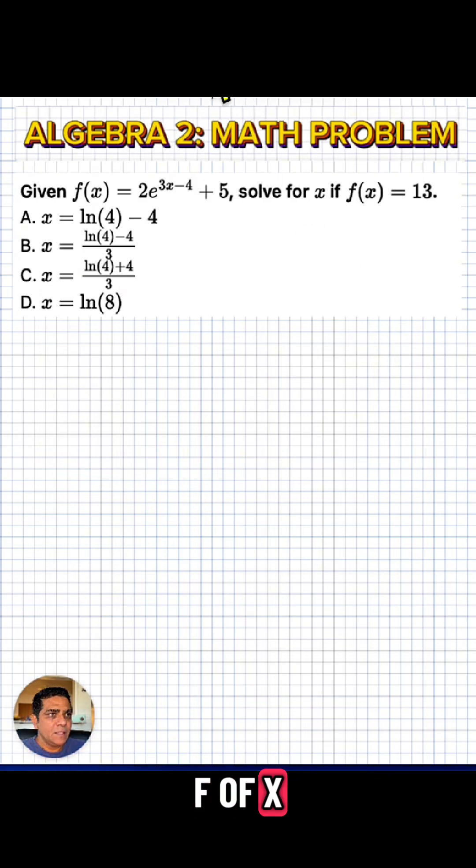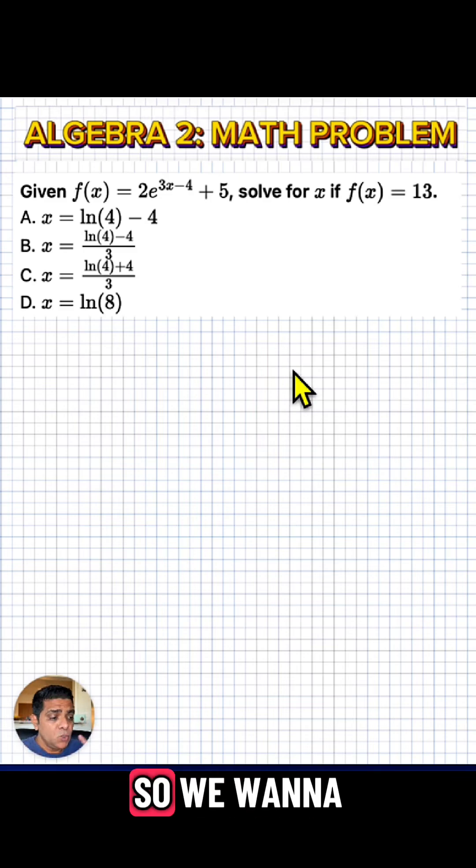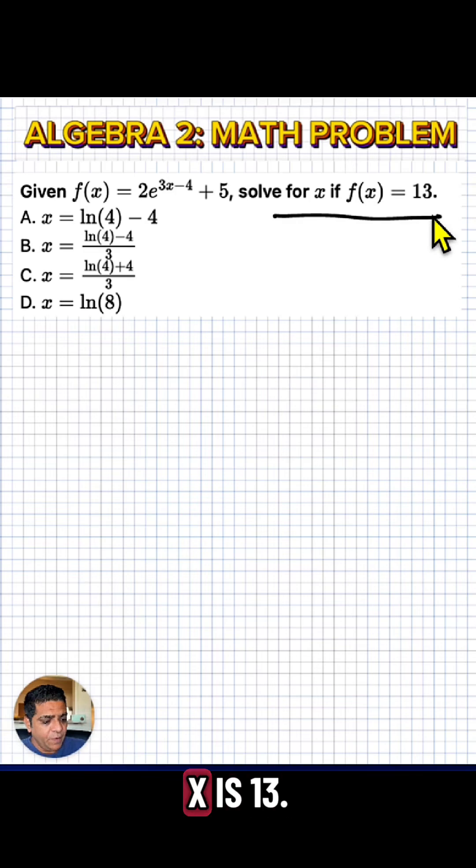What we are given is f(x) equals 2e to the power of 3x minus 4 plus 5. We want to solve for x if f(x) is 13.